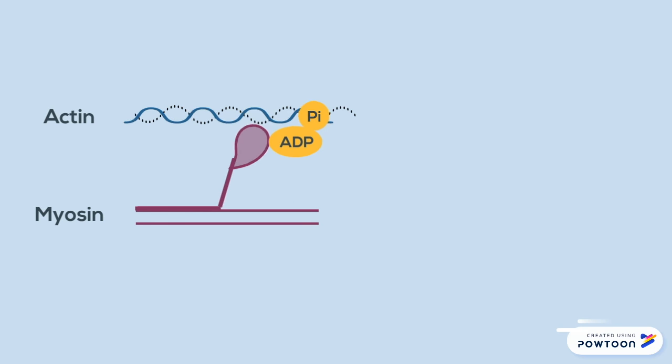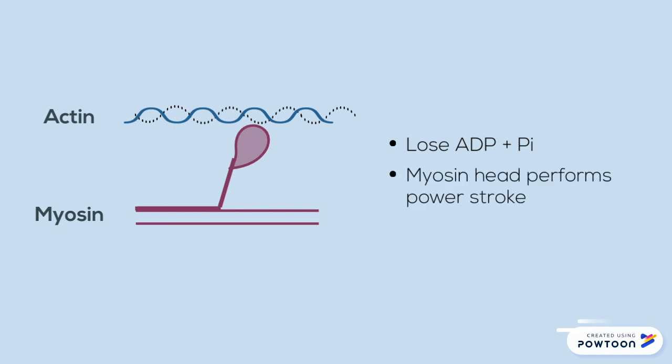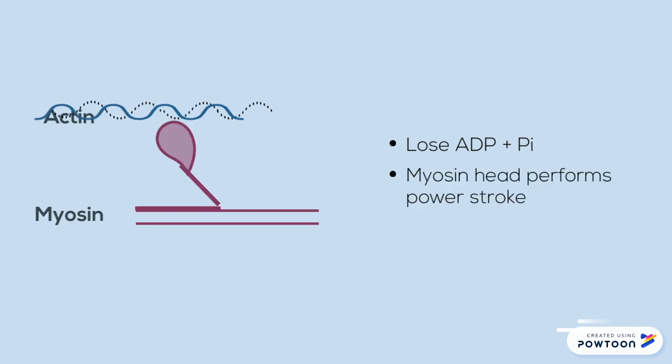Next, the bound ADP and phosphate detach, which causes myosin to forcefully change back to its relaxed shape. This is known as a power stroke.